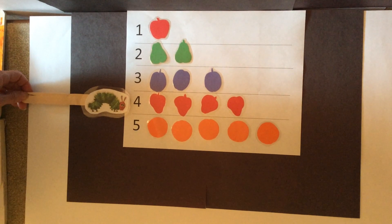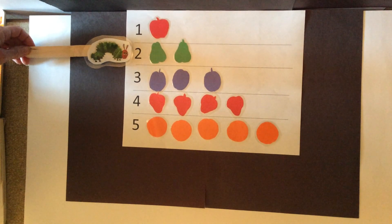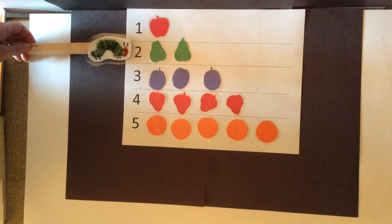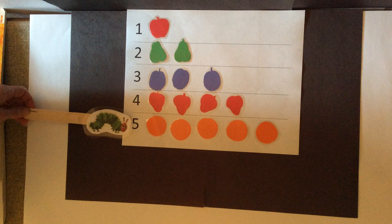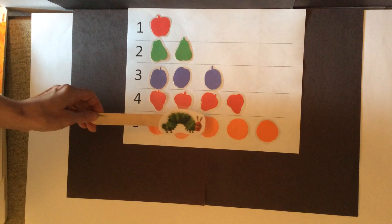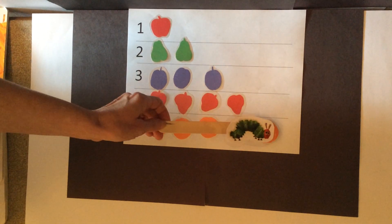How many pears did the caterpillar eat? One, two. There's number two. How many oranges did the caterpillar eat? One, two, three, four, five.